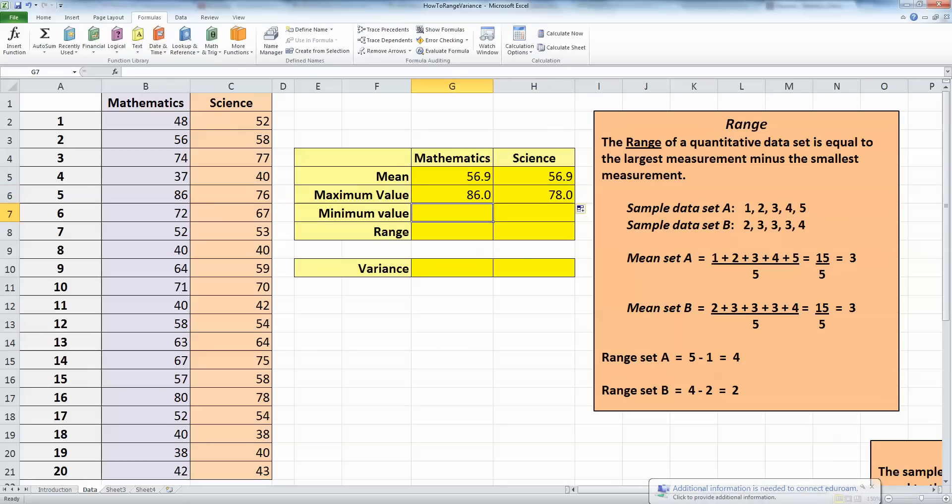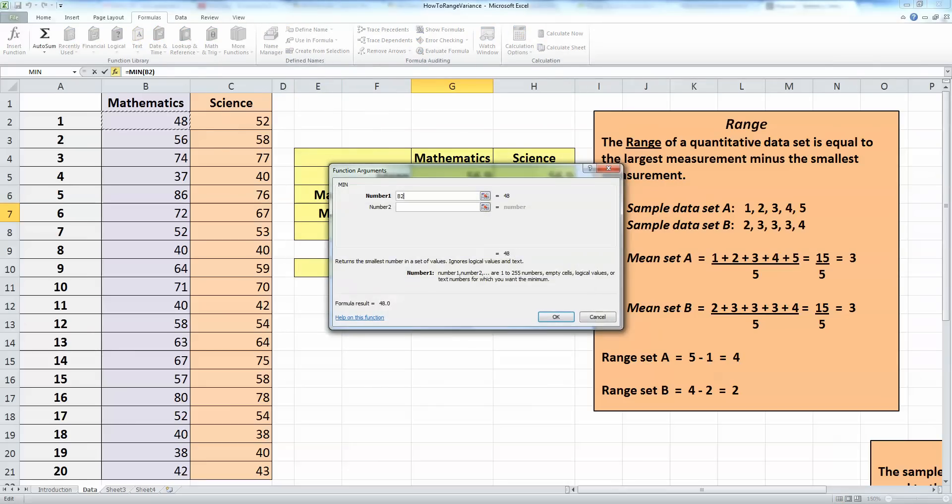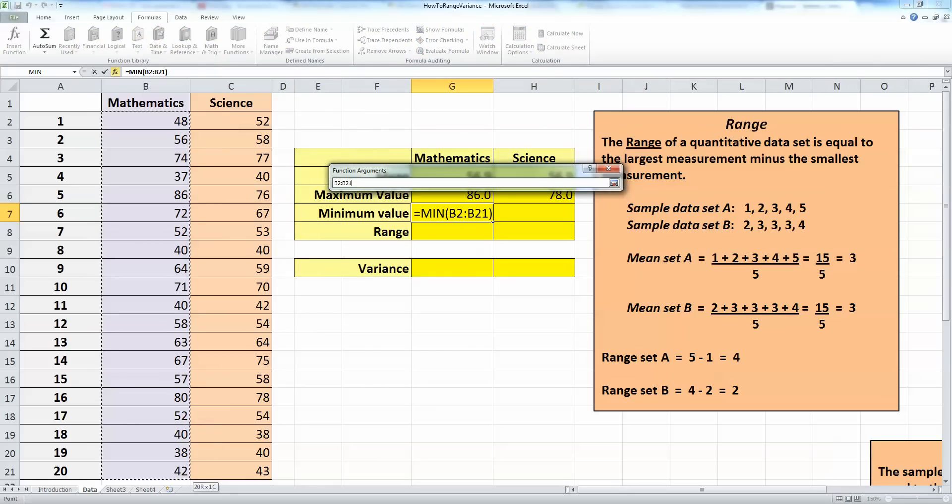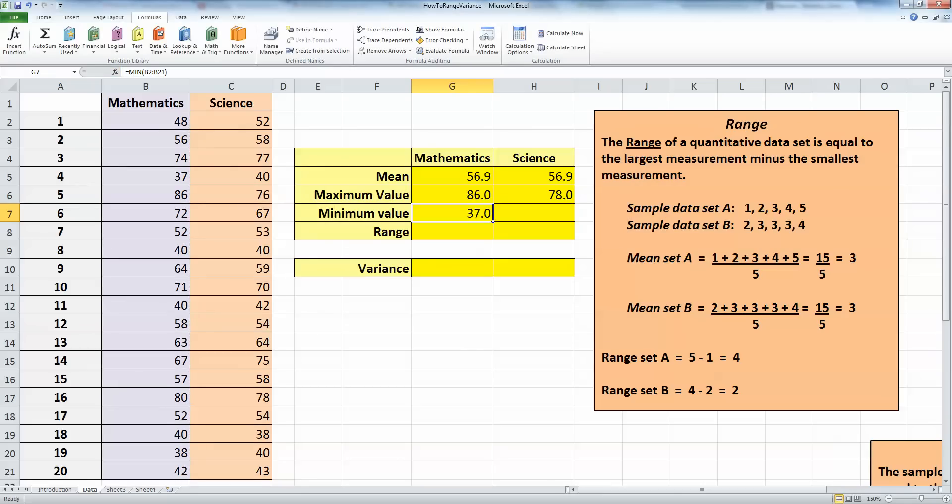Let's take a look at the minimum value. So I'm going to go to more functions again, statistical, scroll down to the M again until I get to the minimum value. Select that and select once again the sample values in my mathematics test and click OK. I can see that the minimum value in the maths test is 37. Autofill again to copy that formula over for the science test where the minimum value is 38.